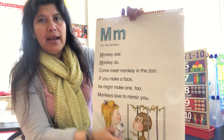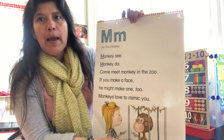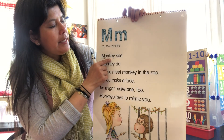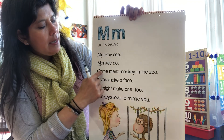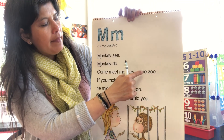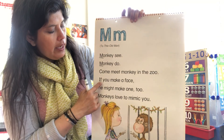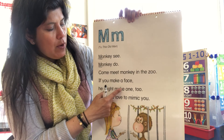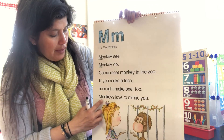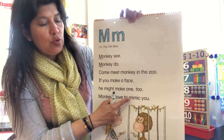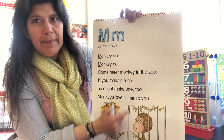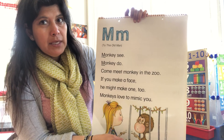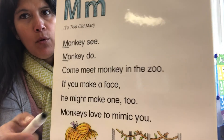We're going to read a poem and go on a letter M search. The poem goes: 'Monkey see, monkey do, come meet monkey in the zoo. If you make a face, he might make one too. Monkeys love to mimic you.' Mimic means to copy. Alright, so we're going to go on the M search — I'm going to bring the poem right next to you so you can see it better.